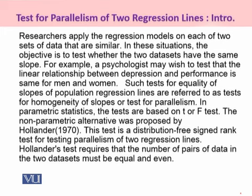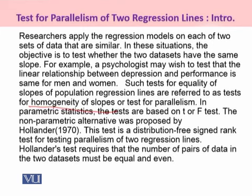A psychologist may wish to test that the linear relationship between depression and performance is the same for men and women. Here the objective is to compare the depression level and performance for two samples — one for men and one for women. In such situations, the test for equality of slopes of the population regression lines is referred to as the test for homogeneity of slope, or popularly called the test for parallelism of two regression lines.